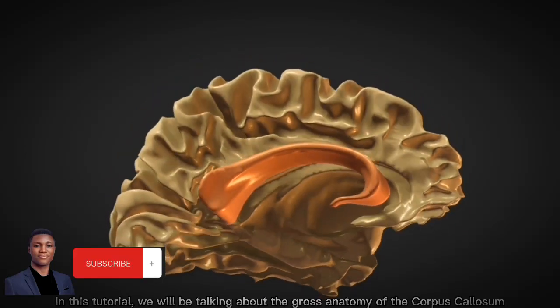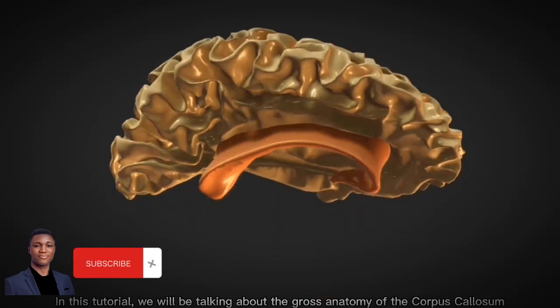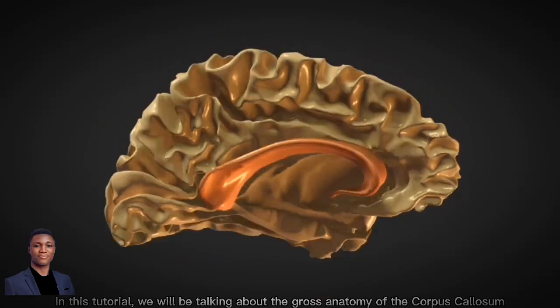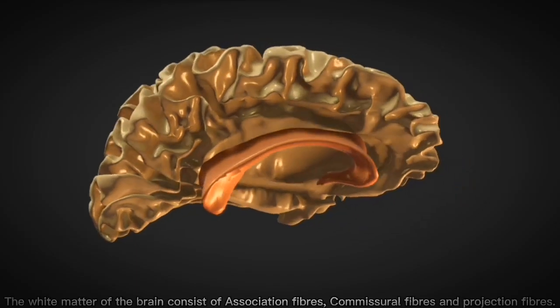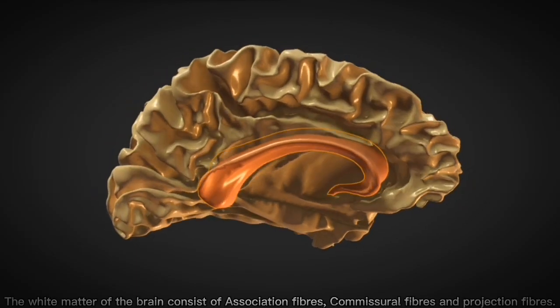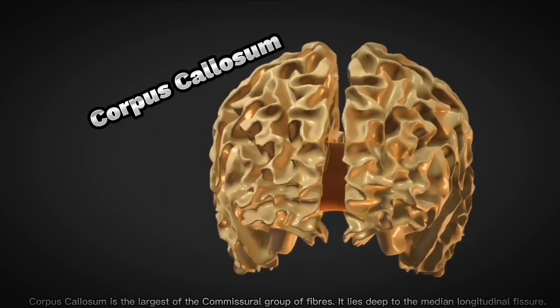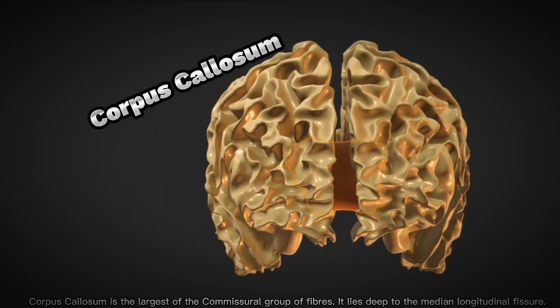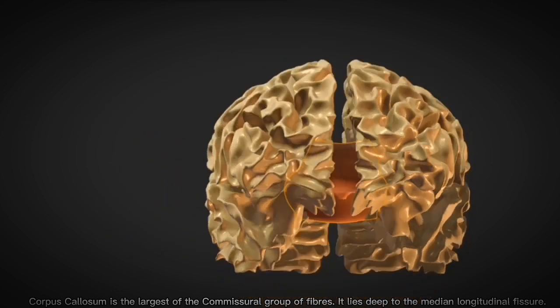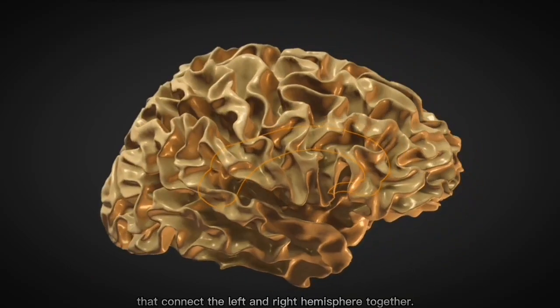In this tutorial, we will be talking about the gross anatomy of the corpus callosum. By introduction, the white matter of the brain consists of association fibers, commissural fibers, and projection fibers. The corpus callosum is the largest of the commissural group of fibers. It lies deep to the median longitudinal fissure that connects the left and right hemispheres together.